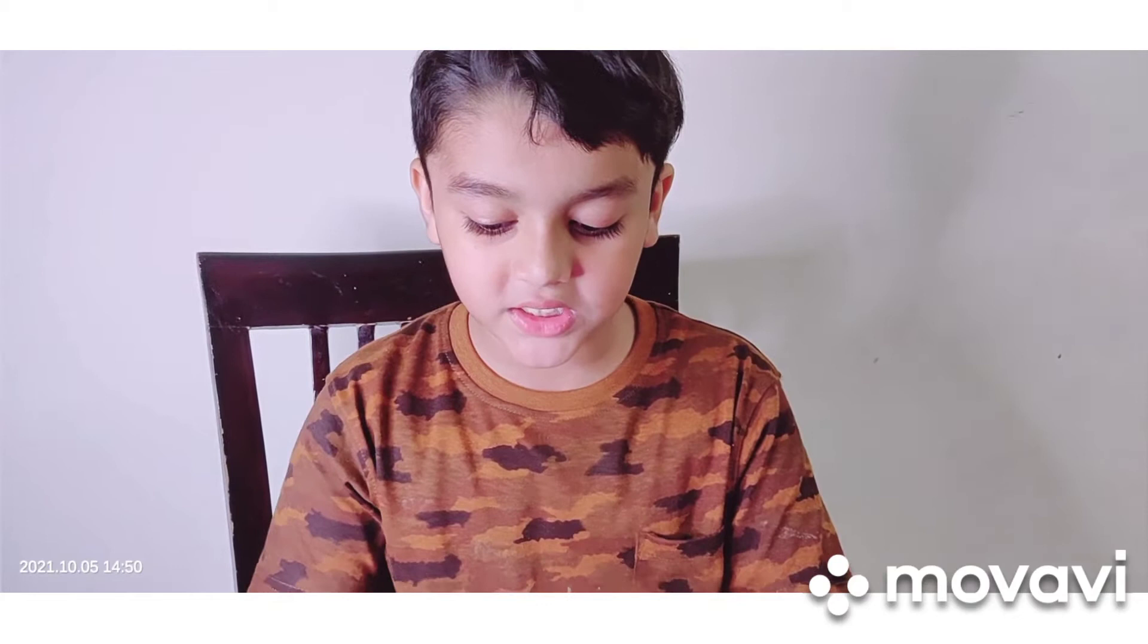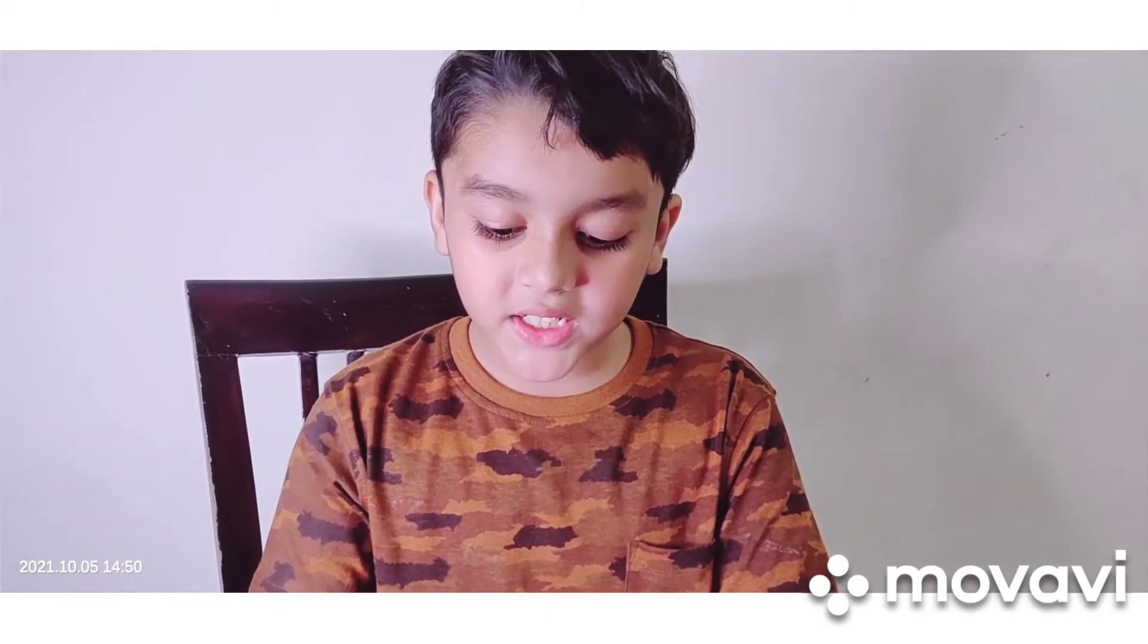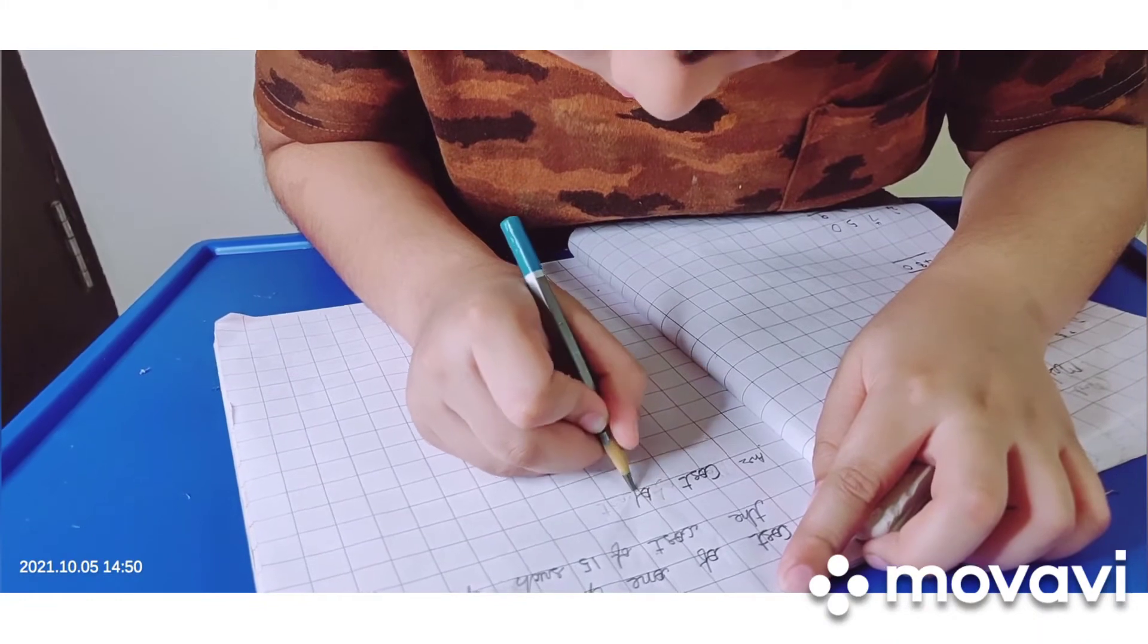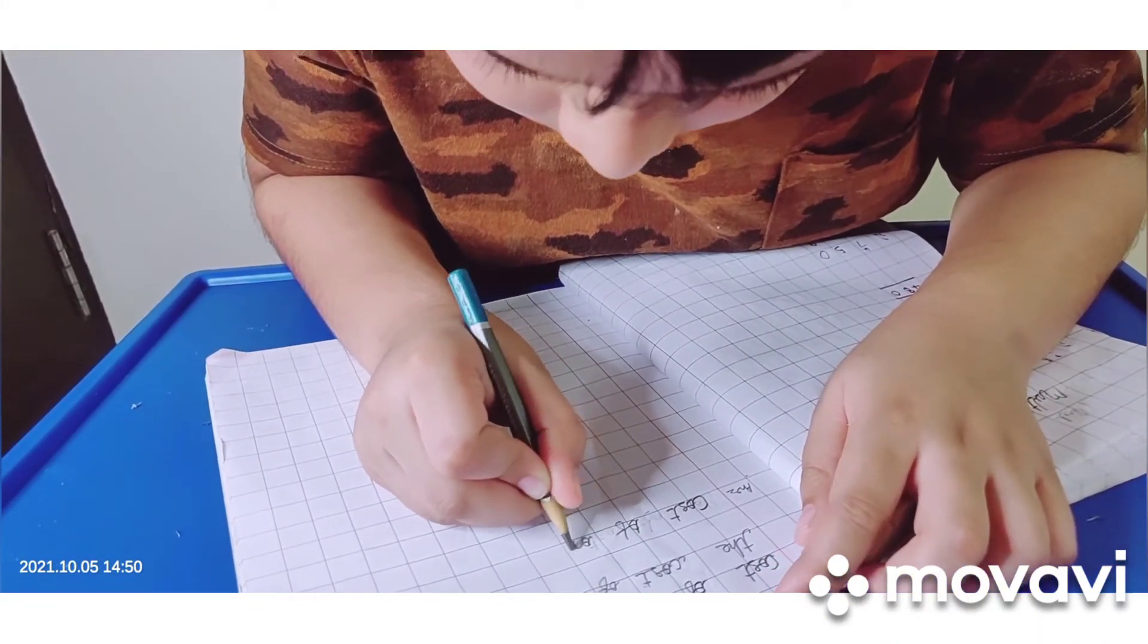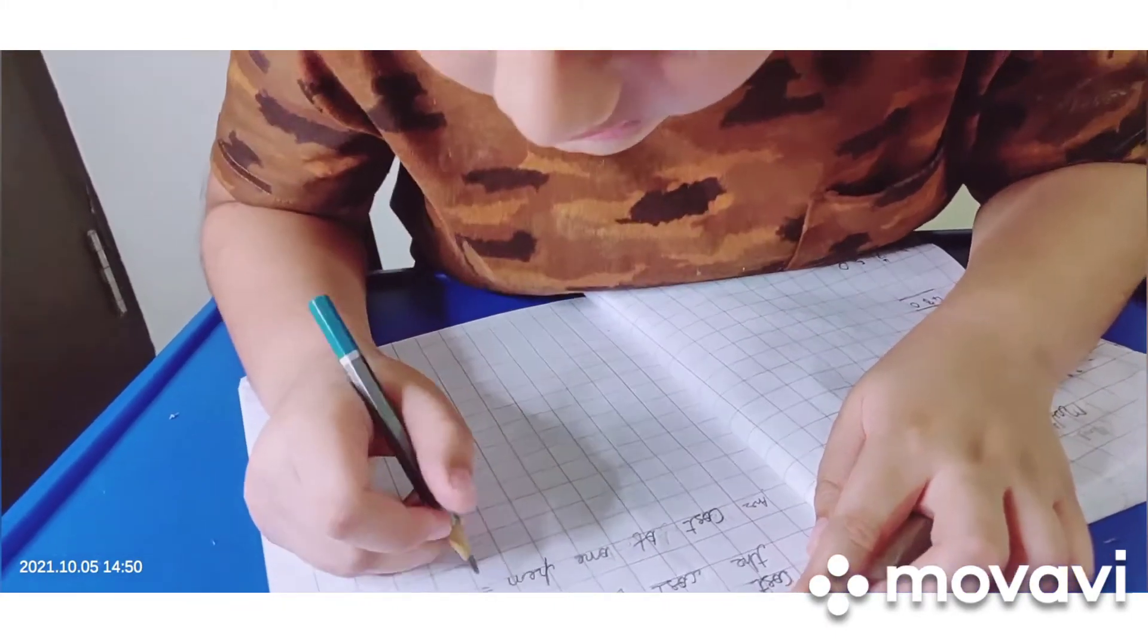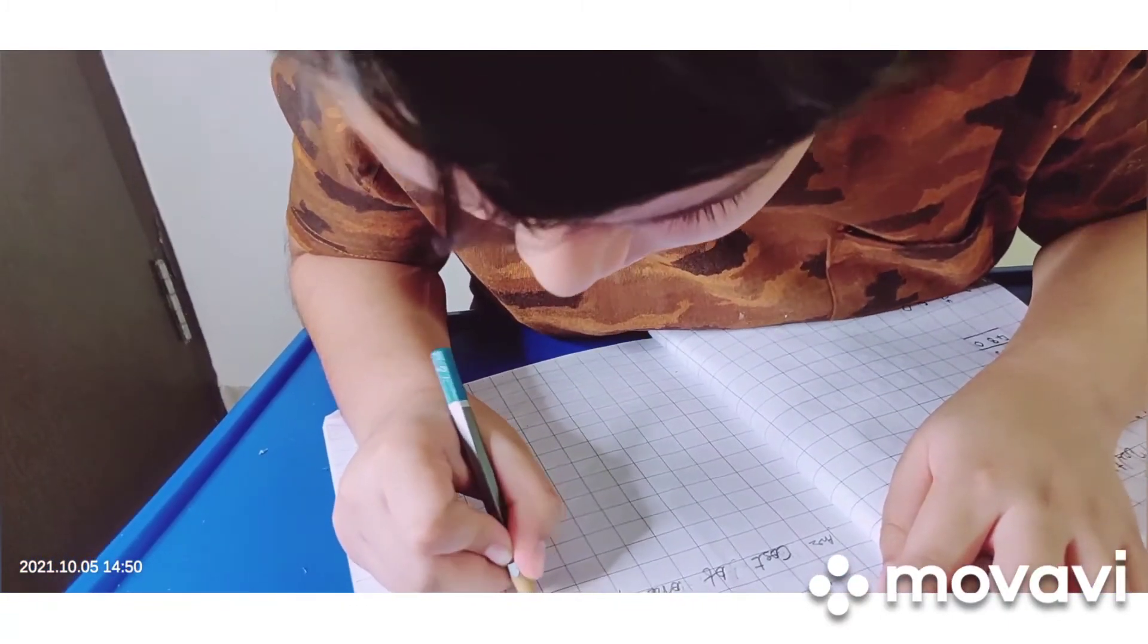Cost of one pen is rupees 15. Find the cost of 15 such pens. Means one pen costs 15 rupees and they are asking to find the cost of 15 such pens. Let us do that. The cost of one pen is rupees 15.